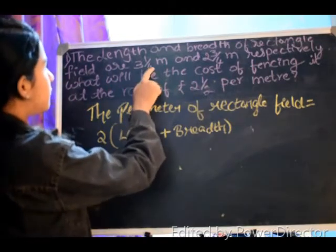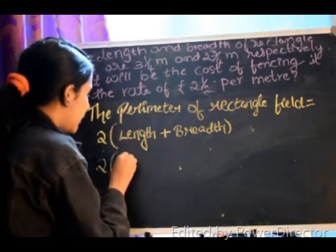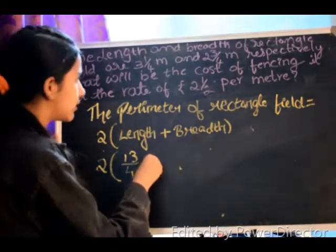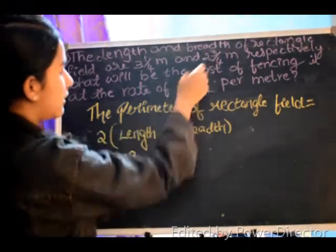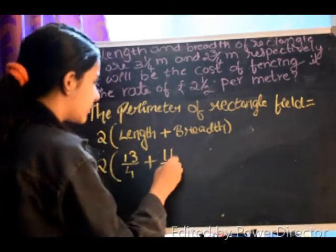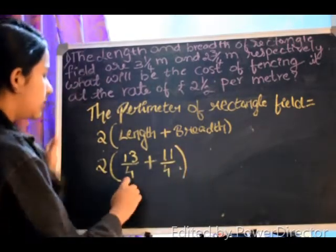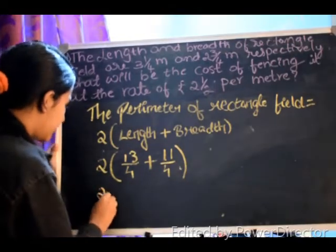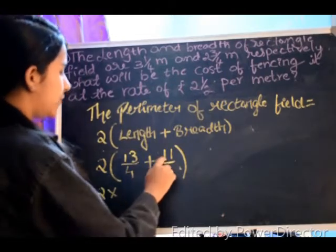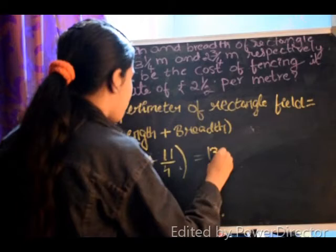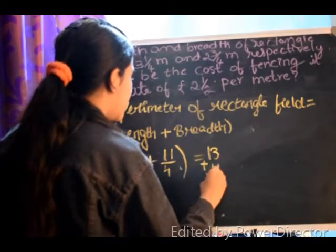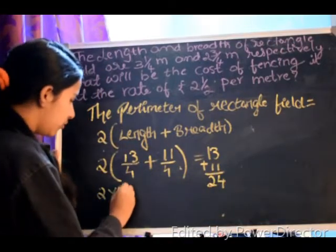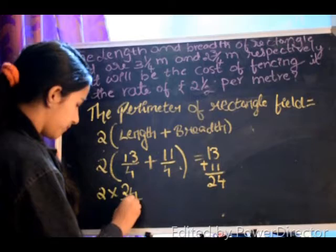4 threes are 12 plus 1 equals 13, so 13 by 4 is the length. Plus 4 twos are 8, 9, 10, 11, so 11 by 4 is the breadth. As the denominators are same, no need to take the LCM. So it is 2 into 13 plus 11, which will be 24. Now 2 into 24 by 4.